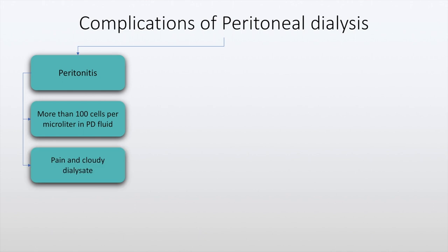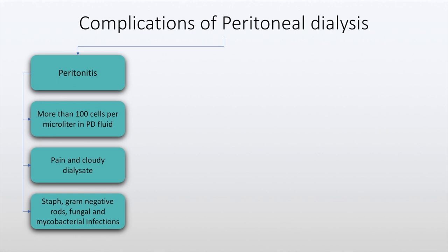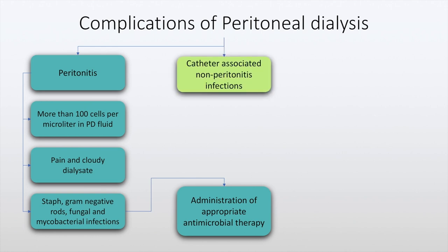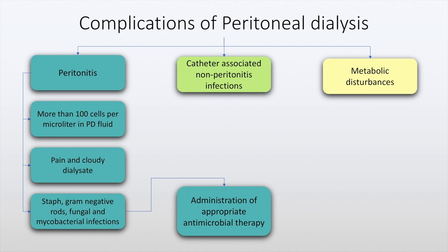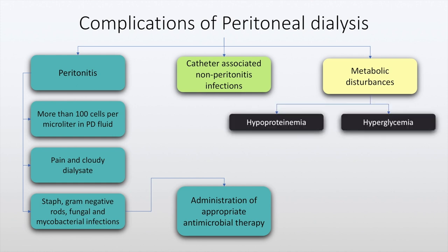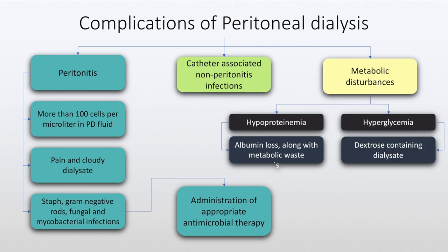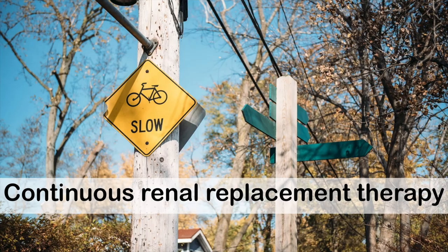The patient may have pain and there might be a cloudy dialysate. Generally, Staphylococcus aureus, gram-negative rods, fungal, and mycobacterial infections are possible and administration of appropriate antimicrobial therapy is the hallmark of care. The patient may also have catheter-associated non-peritonitis infections and metabolic disturbances such as hypoproteinemia and hyperglycemia. Hypoproteinemia is due to albumin loss along with metabolic waste and hyperglycemia is due to dextrose-containing dialysate.